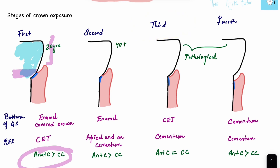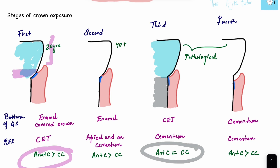In the third stage, the gingival sulcus has shifted to the cemento-enamel junction and the reduced enamel epithelium is now completely on the cementum. At this point, the anatomical crown and the clinical crown are equal, since the gingiva extends exactly to the cemento-enamel junction.